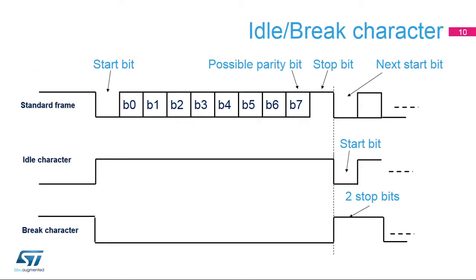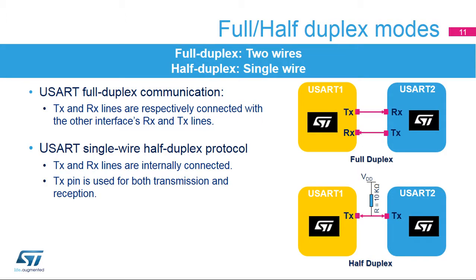This slide shows an example of 8-bit data frames configured with 1 stop bit. An idle character is interpreted as an entire frame of 1s; the number of 1s will include the number of stop bits. A break character is interpreted on receiving 0s for a frame period. At the end of the break frame, 2 stop bits are inserted. The USART supports full duplex communication where TX and RX lines are respectively connected with the other interface's RX and TX lines.